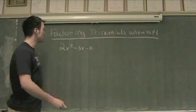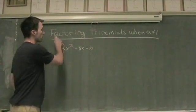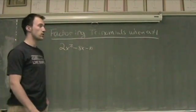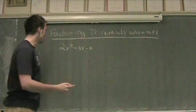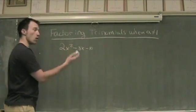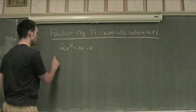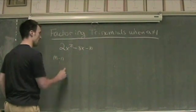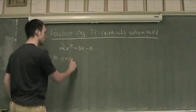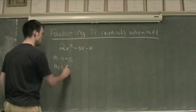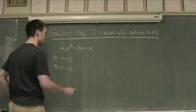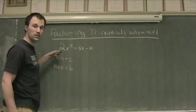Hi and welcome. In this video, we're going to be working on factoring trinomials when A is not equal to 1. If you remember, when A was equal to 1, we had those two numbers M and N, and M times N was supposed to be equal to C, and M plus N is supposed to be equal to B. That's when A was equal to 1.